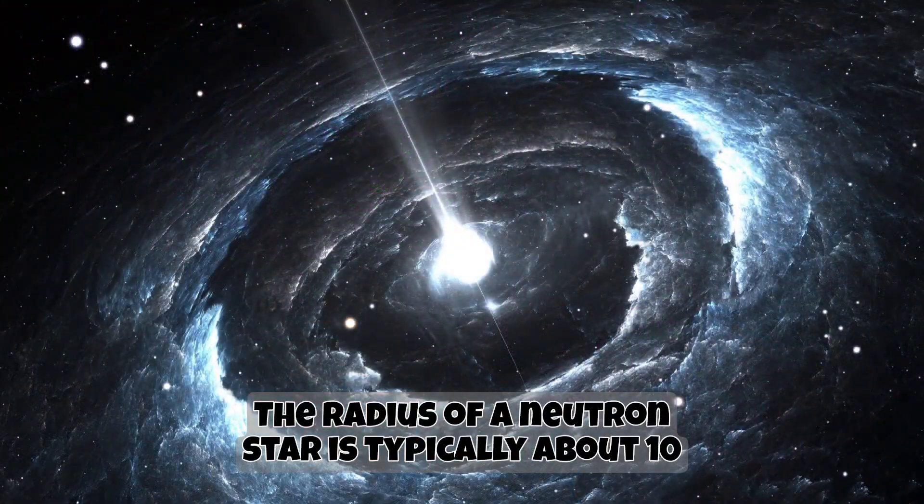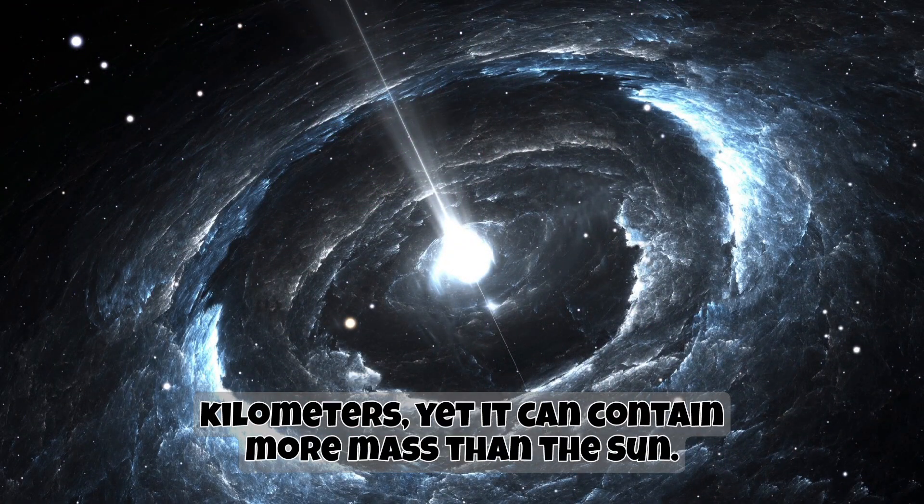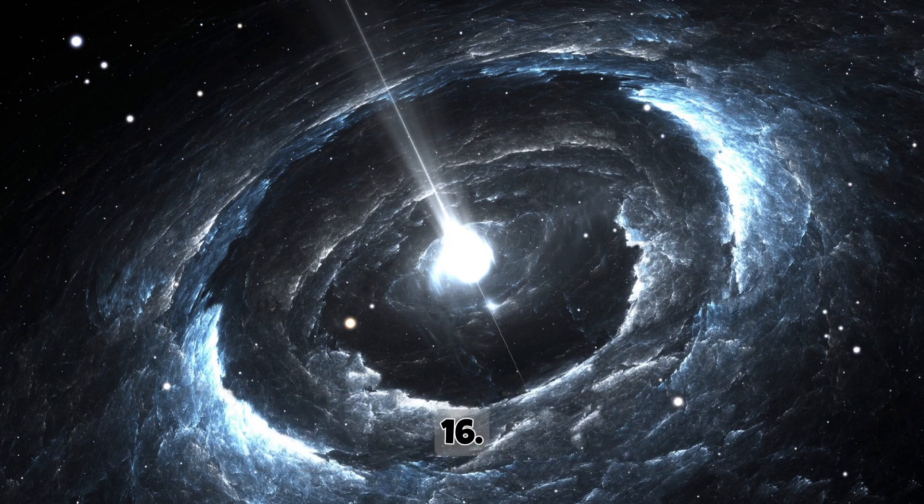The radius of a neutron star is typically about 10 kilometers, yet it can contain more mass than the Sun.